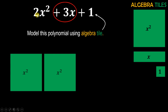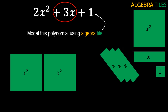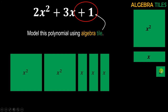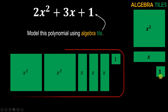Next you have plus 3x, and we have already shared that this is the tile for x. Whenever you have an x term in your polynomial you use this tile to represent it. You take this tile a total of 3 times because you need to represent 3x. Last in the polynomial you have plus 1, so you take the ones tile only one time. This is how you simply model any algebraic polynomial.